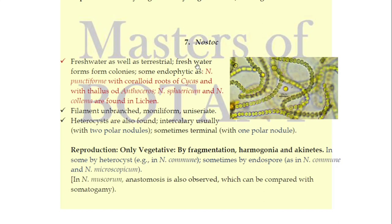Now we come to Nostoc. Nostoc is a freshwater alga and is also terrestrial. Freshwater forms also form colonies. Some species of Nostoc are endophytic — meaning they are found inside plants. For example, Nostoc punctiforme shows symbiosis with coralloid roots. Some also show symbiotic association with Anthoceros, which is a bryophyte. Nostoc sphaericum and Nostoc collema are two species associated with lichens.